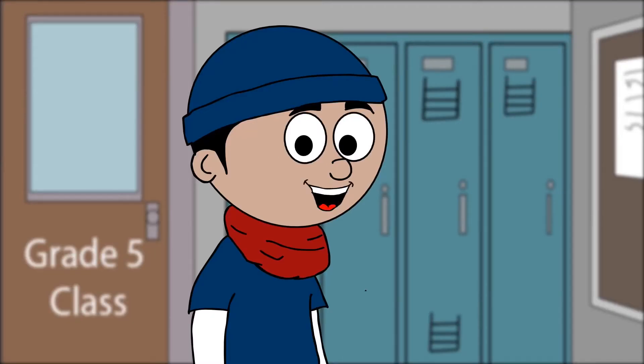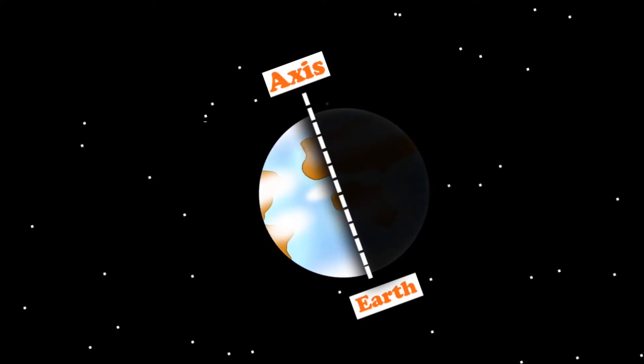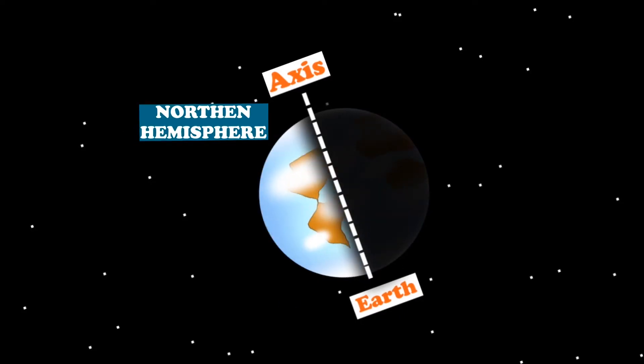This means different parts of our planet get different amounts of light and heat. Let's call this part the northern hemisphere and this part the southern hemisphere.